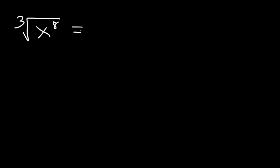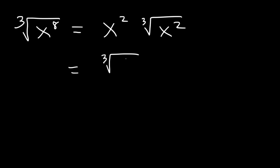Now what about variables? What is the cube root of x to the 8th? How many times does 3 go into 8? 3 goes into 8 twice — 3 times 2 is 6, and 8 minus 6 is 2, so there's 2 remaining. Break 8 into 6 and 2: since 6 is a multiple of 3, 6 divided by 3 is 2. So the answer is x squared times the cube root of x squared.